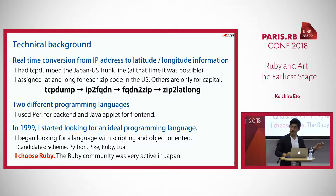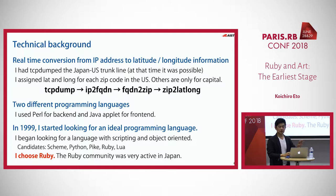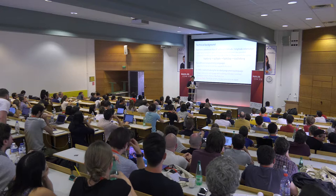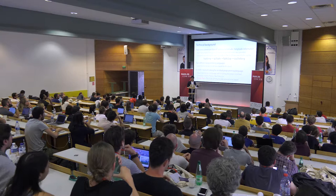I'd like to describe the technical background of this work. This work was attached to the backbone of the internet line — the WIDE project helped us make this artwork. I did a tap to the backbone of the internet line, TCP dumped the whole packet, then checked the source IP address and destination IP address. I converted IP addresses to FQDN — domain names — then converted domain names to addresses using a WHOIS database, then used zip codes to translate to latitude and longitude. I created this kind of database and converted data in real time.